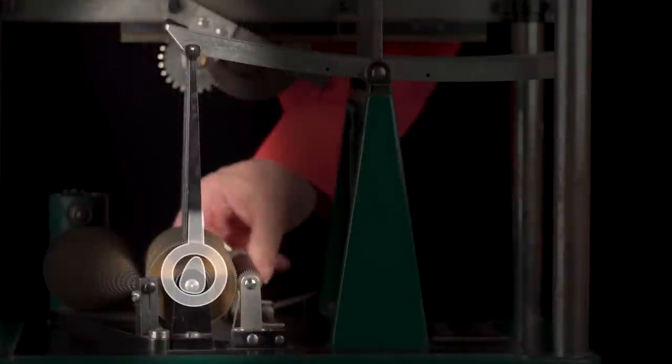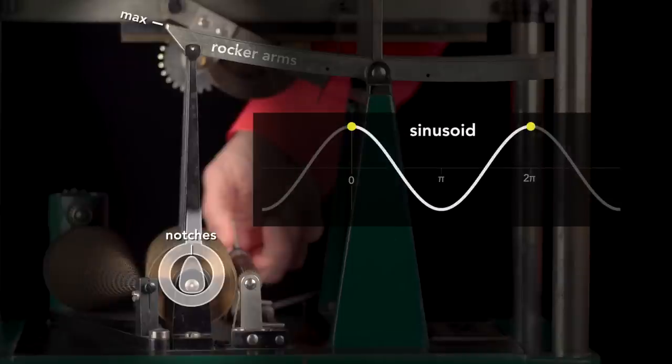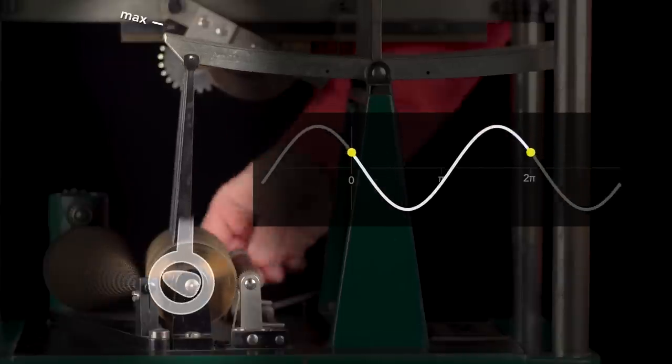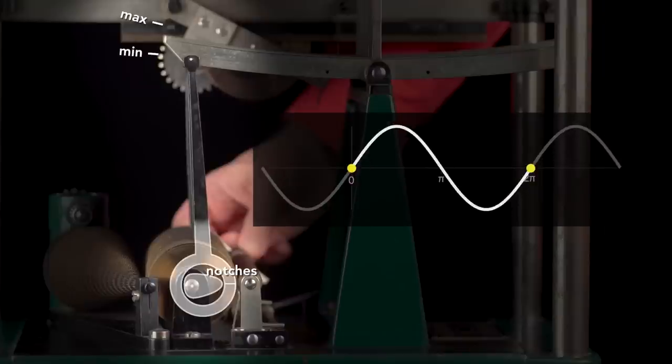Why is this? When the notches are at the top, the rocker arms are at their maximum travel. That's like a sinusoid starting at its peak, which is equivalent to a cosine. When at the bottom, the rocker arms are at their lowest point of travel, which is like a sinusoid starting at its trough. This is like a negative cosine. And when the notches are on the side, this is a middle position, which is equivalent to a sine.